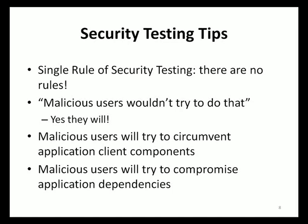Lastly, security testers must be aware of the capabilities of more sophisticated malicious users. Any external dependencies that your application may require to function correctly — such as web services, firewalls, and other external applications — are viable attack vectors. Your application must be able to continue to operate securely when its dependencies fail or have been compromised. Building your own malicious versions of those external dependencies is the best way to test this scenario.